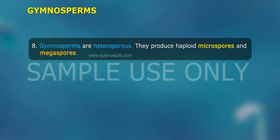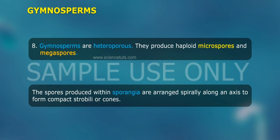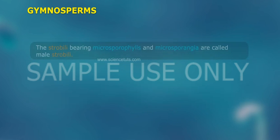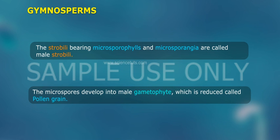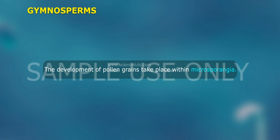Eighth, gymnosperms are heterosporous — they produce haploid microspores and megaspores. The spores produced within sporangia are arranged spirally along an axis to form compact strobili or cones. The strobili bearing microsporophylls and microsporangia are called male strobili. The microspores develop into the male gametophyte, which is reduced, called the pollen grain. The development of the pollen grain takes place within the microsporangia.